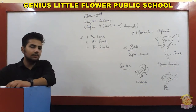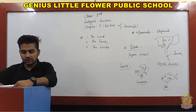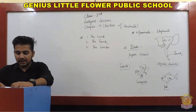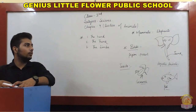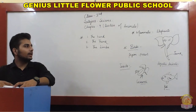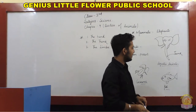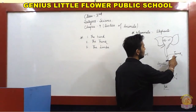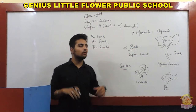Mammals give birth to young ones. Elephant is also a mammal but has a special organ called a trunk. So the elephant is a mammal and it also has an organ which we call the trunk.